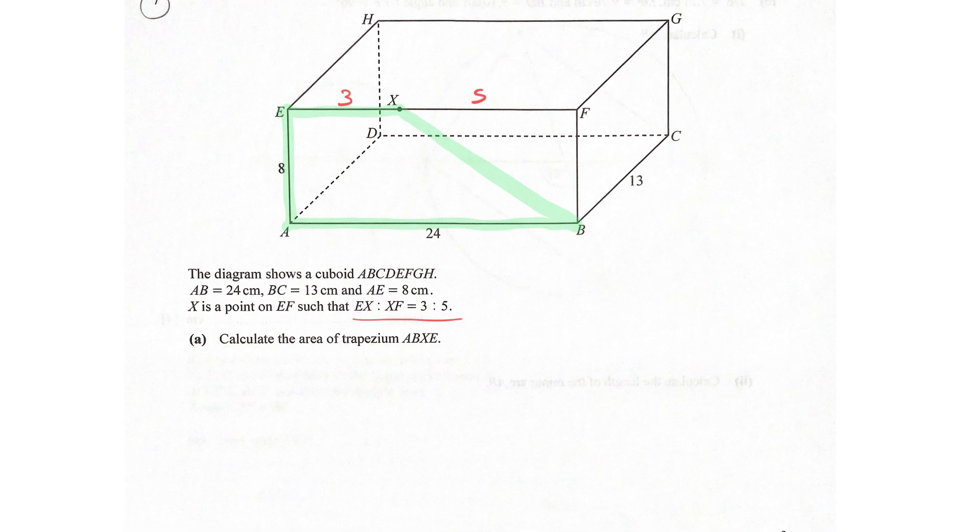It's a really simple 2D trapezium. So using ratios, clearly if the whole side AB is the same as EF. So if that's 24, then this must be 9 cm and therefore this is 15 cm.